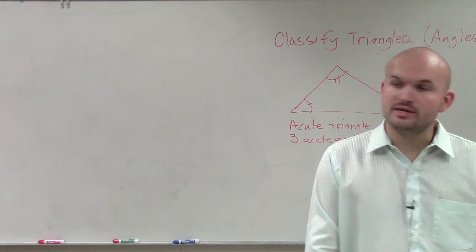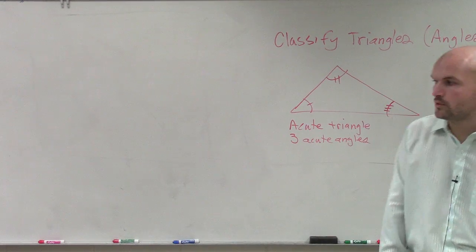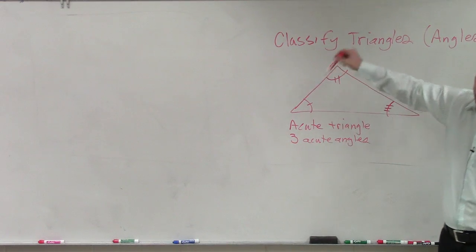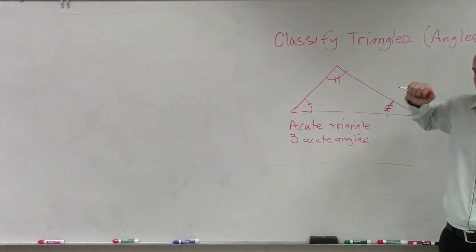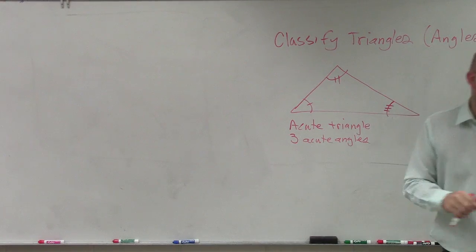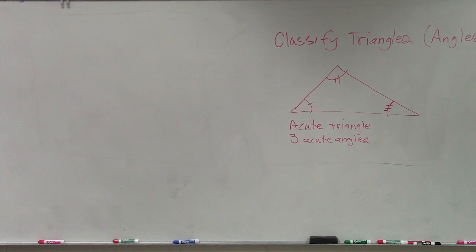That's going to be an acute triangle, three acute angles. And more specifically, they're not going to be equal in measure. You can see that each of these angles are different. That's going to be an acute triangle because we're going to get a little bit more specific on our next one. So that's an acute triangle when you have three acute angles.